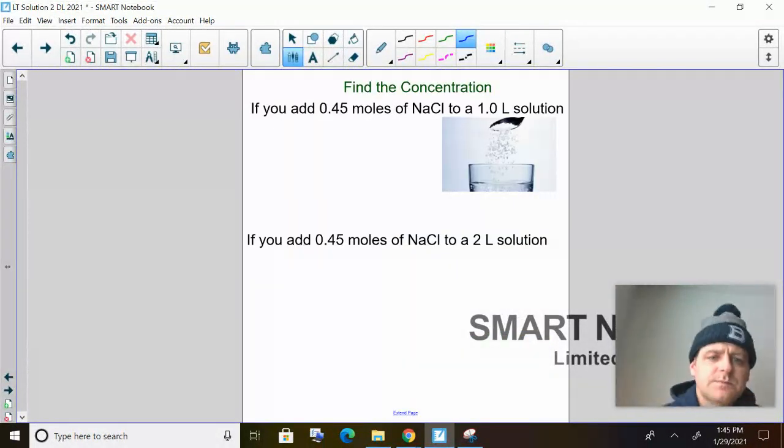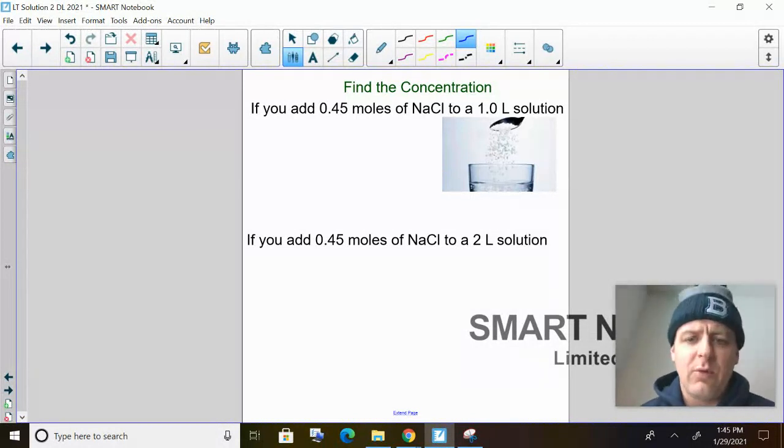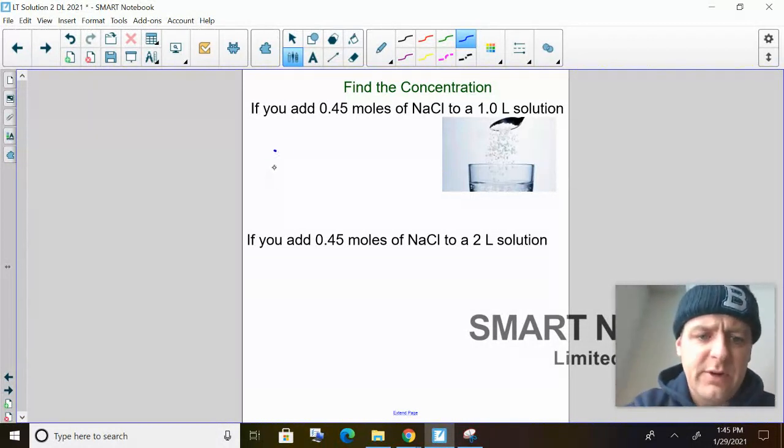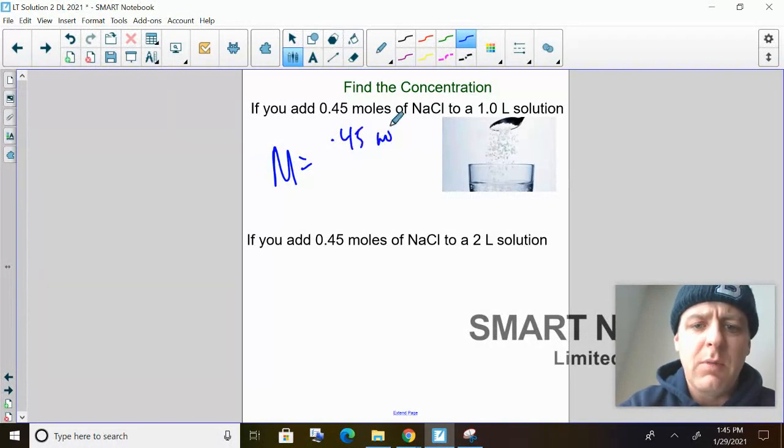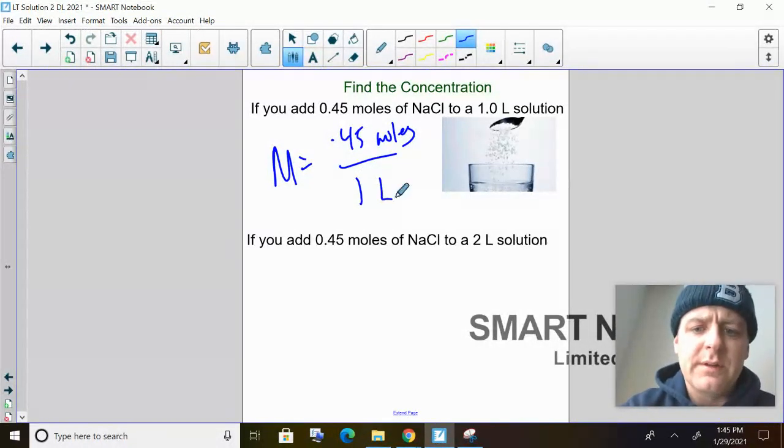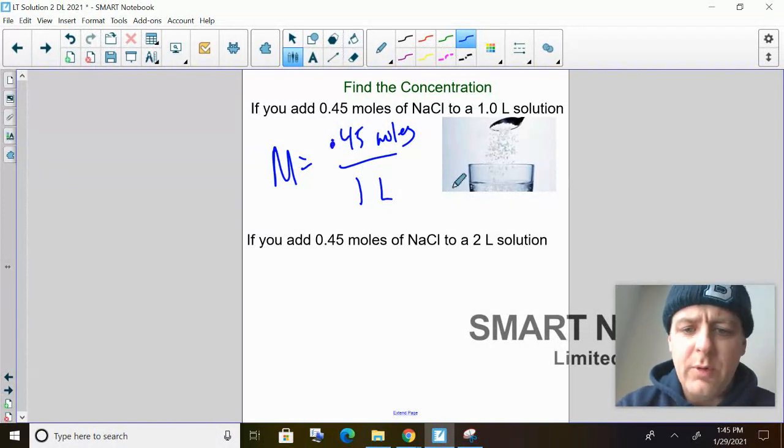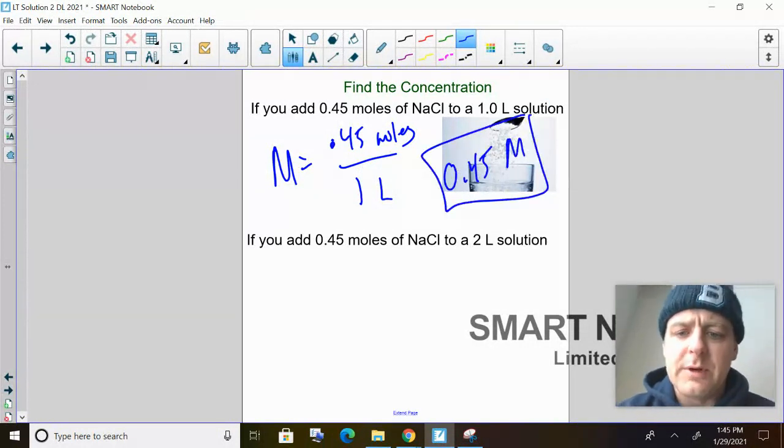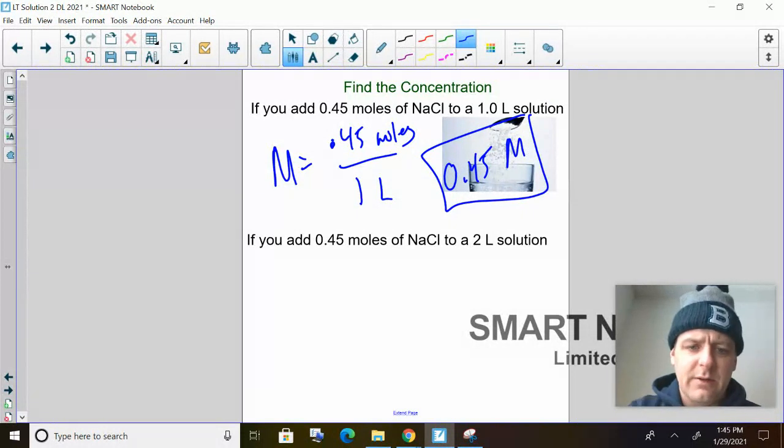So if I have this here, if you have 0.45, I just want to find the concentration, I just want to find big M. So if I have 0.45 moles divided by one liter, well, 0.45 divided by one is going to be 0.45 big M molar. That'd be your answer. So that's what we're solving for, big M.